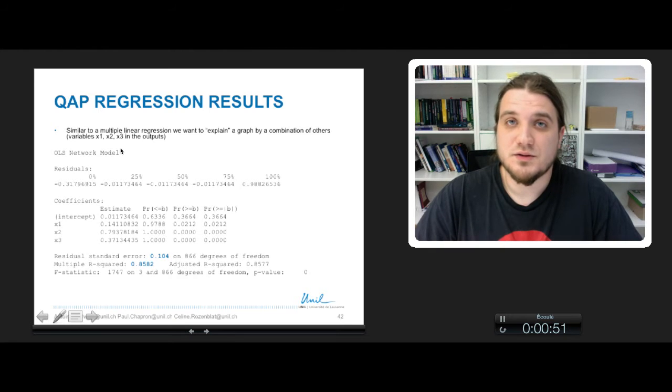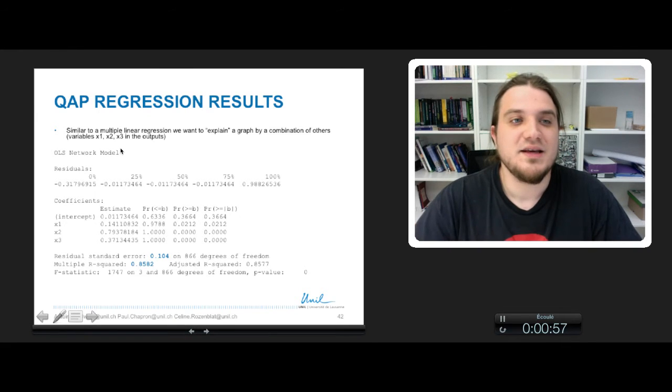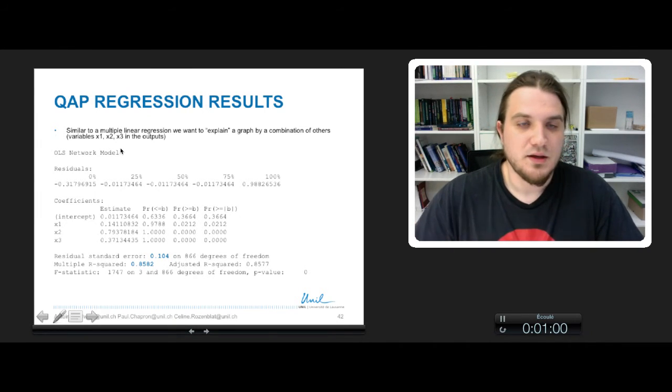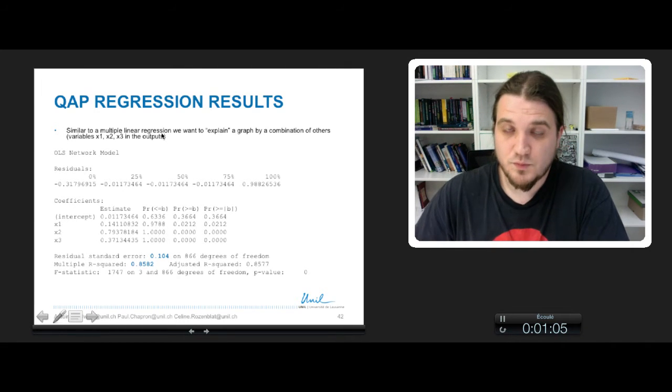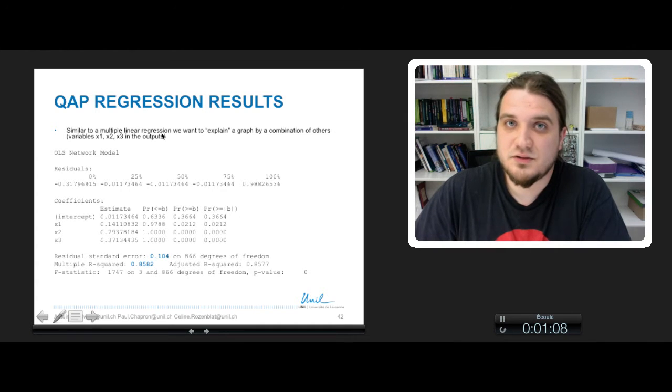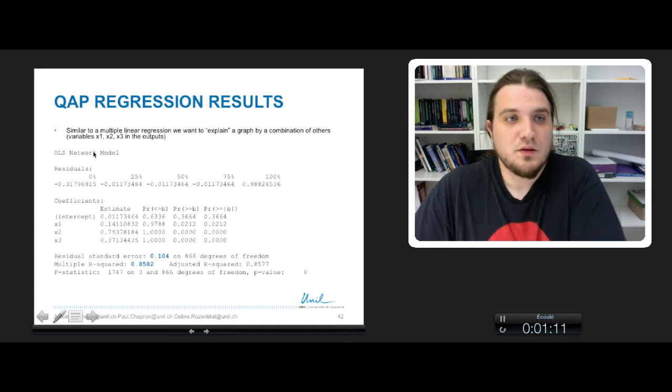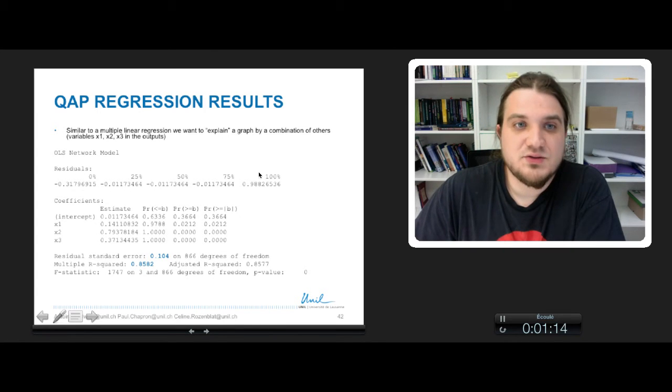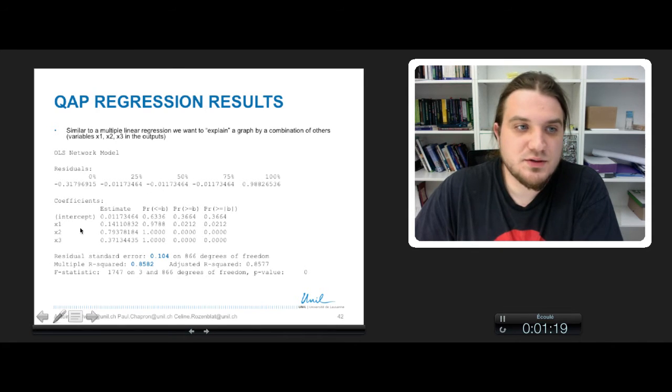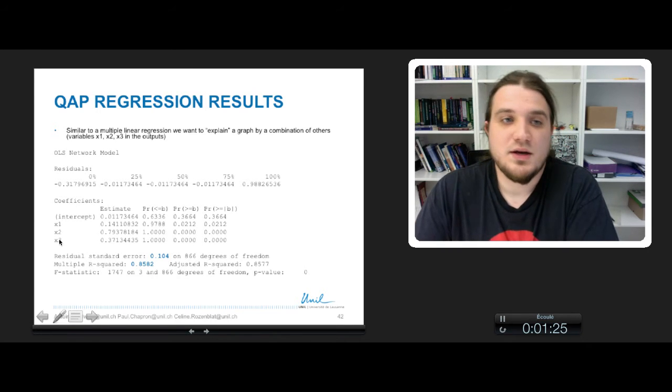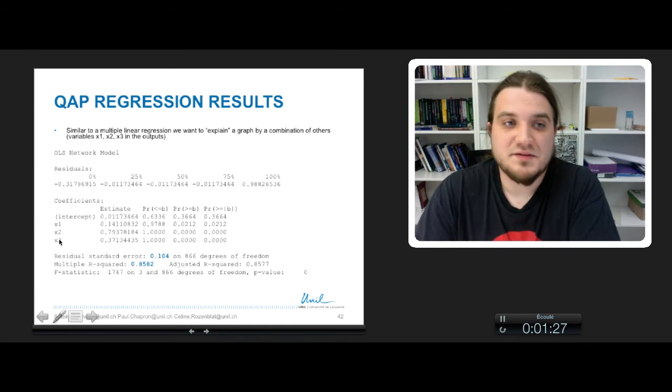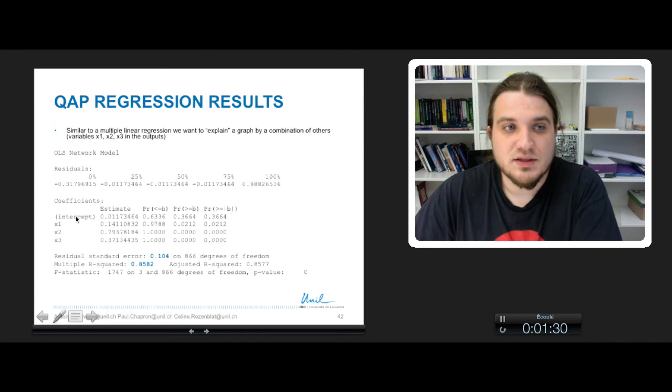You perform the QAP regression with the function netlm from the package SNA of R and the results you've got are very similar to a multiple linear regression where we want to explain a variable by the combination of some other independent variables. So you can see here the distribution of residuals and here's the result of the regression. So x1, x2 and x3 correspond to the three graphs g1, g2, g3 with which we want to explain the graph g. And it adds a constant term called intercept here.